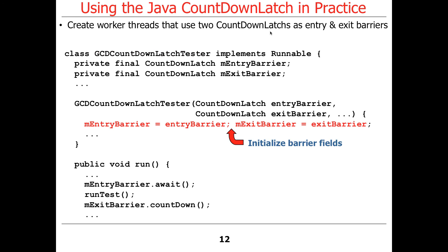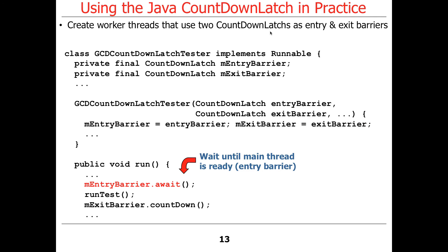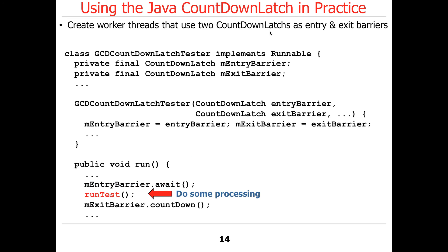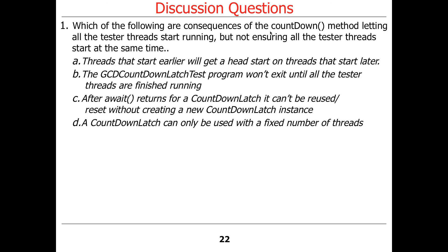The constructor stores the entry and exit barriers passed to it as fields in the object — remember, there's one of these per GCD function per thread. The run method first awaits the entry barrier, waiting until the main thread has counted down. It doesn't wait for the other threads, only for the main thread's countDown. Once it's able to run, it runs the test and performs the GCD computations. When finished, it calls countDown on the exit barrier to signal it's done. When the last one finishes and the count reaches zero, the main thread proceeds.